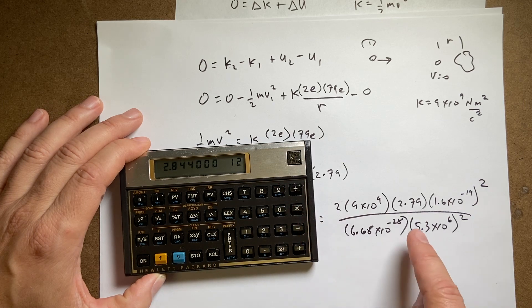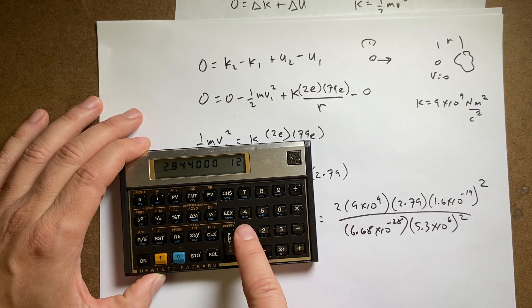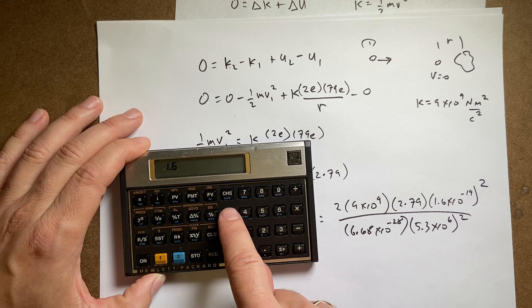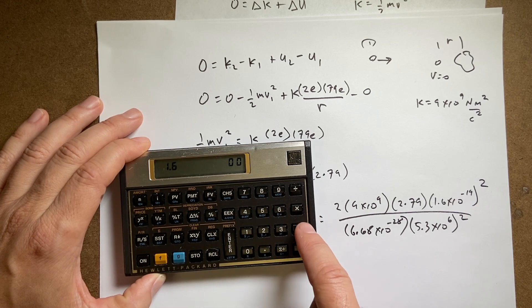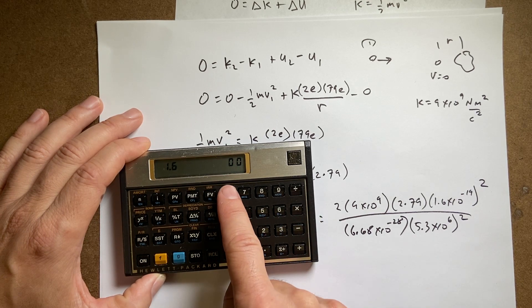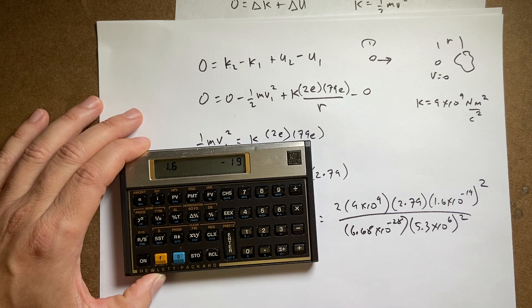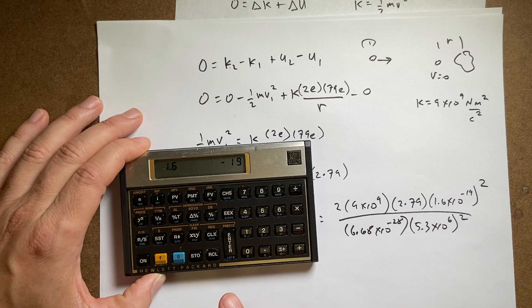79 times. Multiply it by this square root. So I'm going to say 1.6 times 10 to the change sign 19. Now I'm going to square that. Where's my square button?